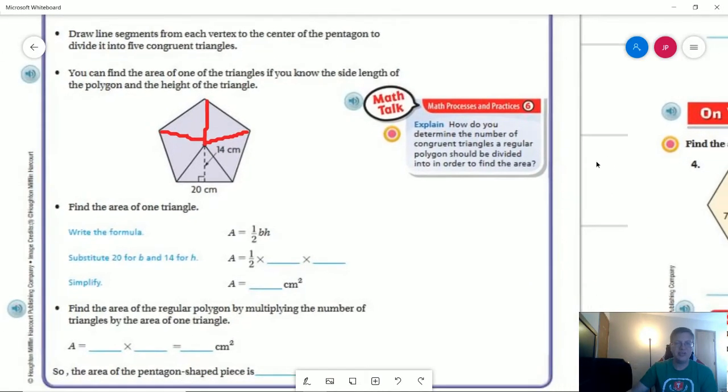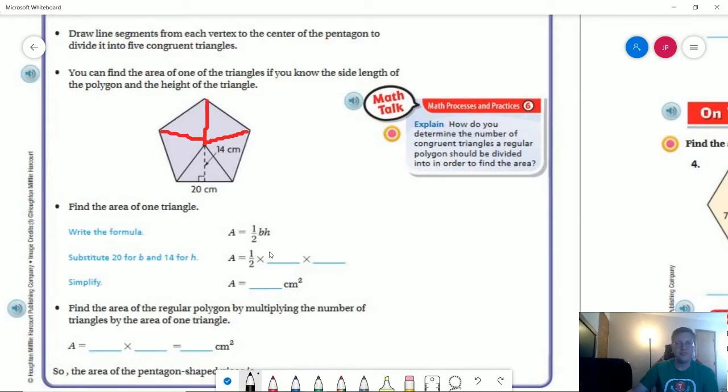So let's go ahead and do the unlock the problem. So we are working with a base of 20. So go ahead and fill in and work along with me. Our height is going to be 14. So our easiest way to do this would probably be to take the half of 20 first because that would be 10. So 10 times 14 should give us 140 centimeters squared, which I am then going to multiply by five because I have five of those triangles. And that would give us 700 centimeters squared.